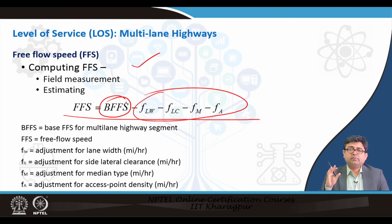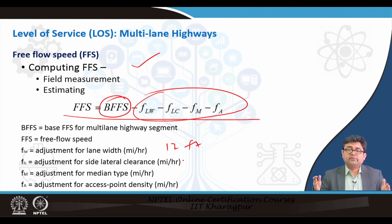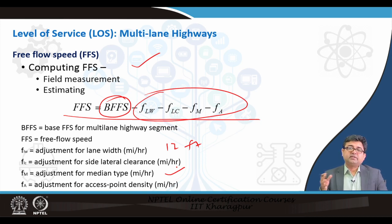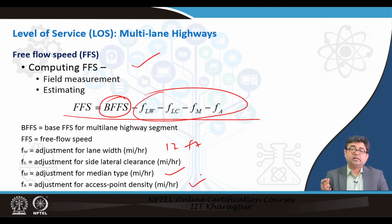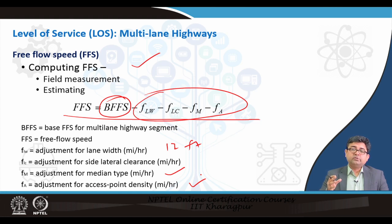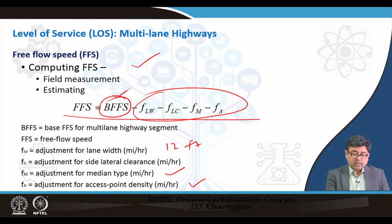Free flow speed is given by an empirical equation: the base free flow speed of a multi-lane segment minus a set of adjustments. The base free flow speed is always developed keeping in mind ideal conditions — lane width of 12 feet, certain lateral side clearance, and type of median. If there is no median, the speed and capacity are affected. If there is a wide median, grassy median, or barrier between downstream and upstream flow, there will be variations in level of service. We have standard values given in highway capacity manuals developed in the US, and India has also adopted and used values per local conditions.